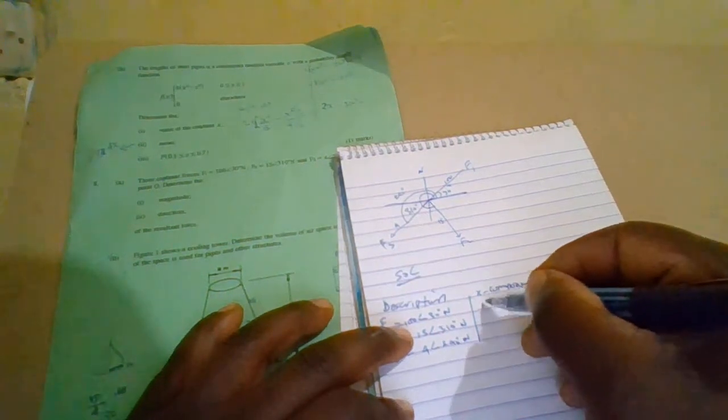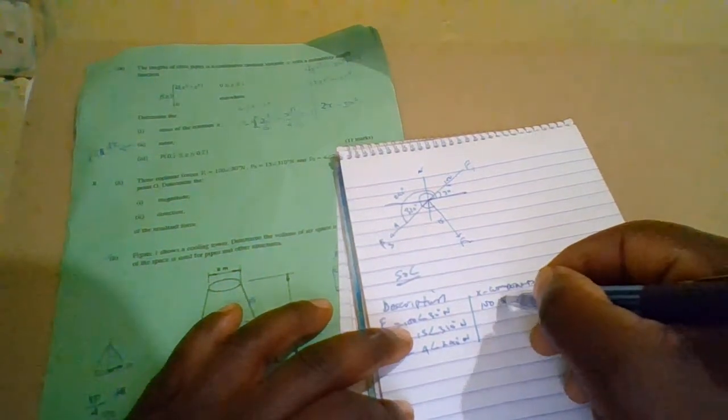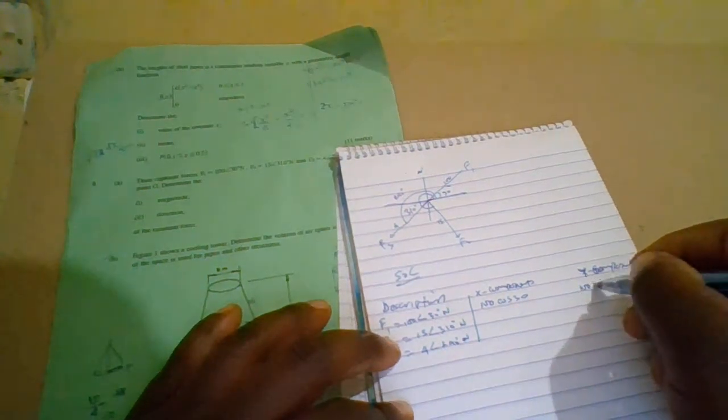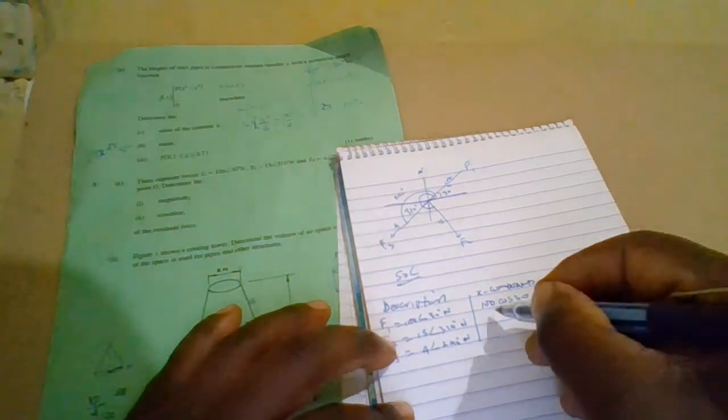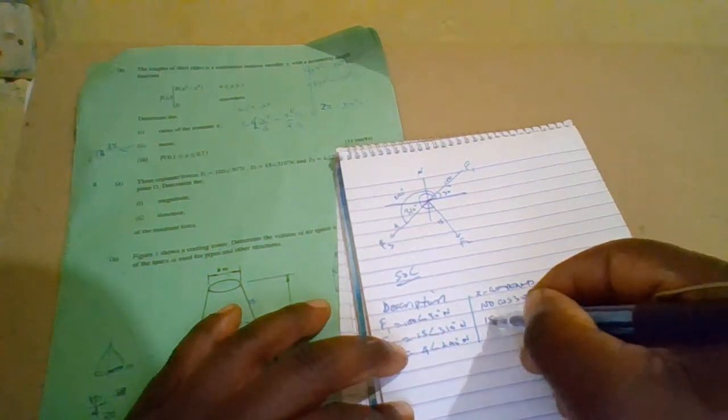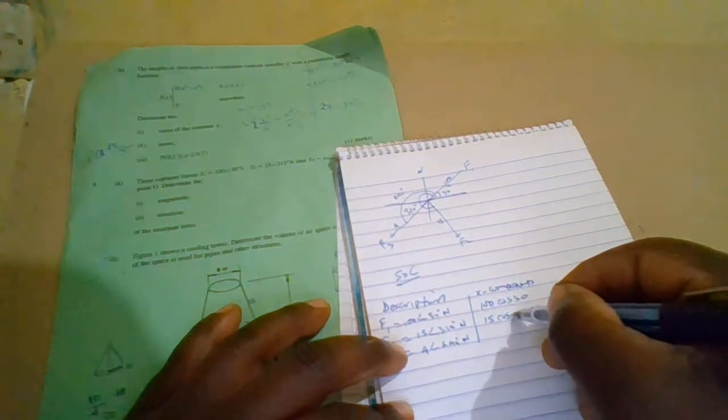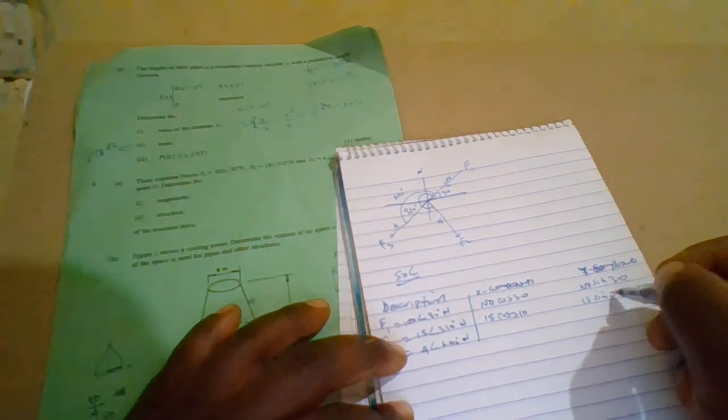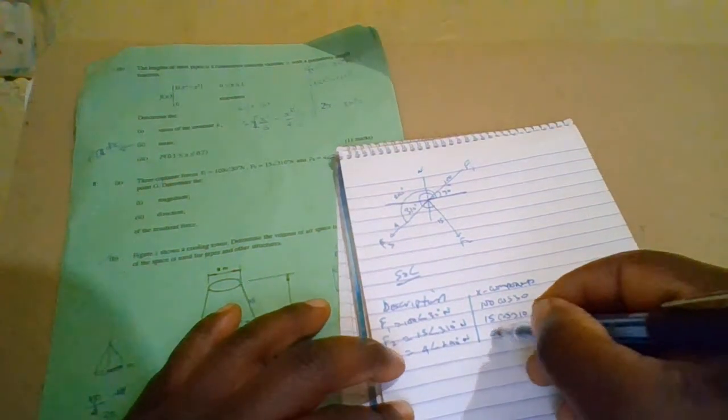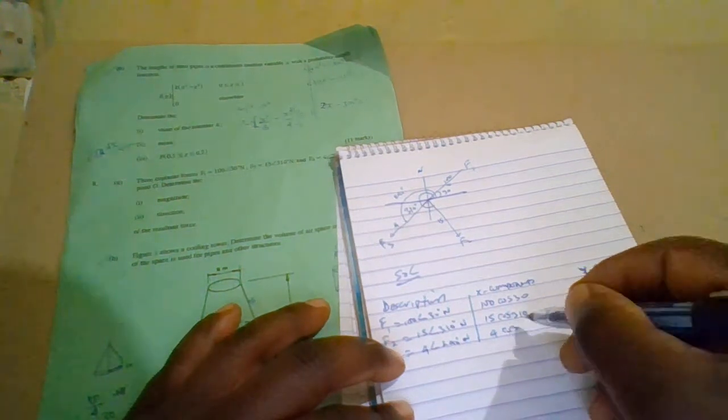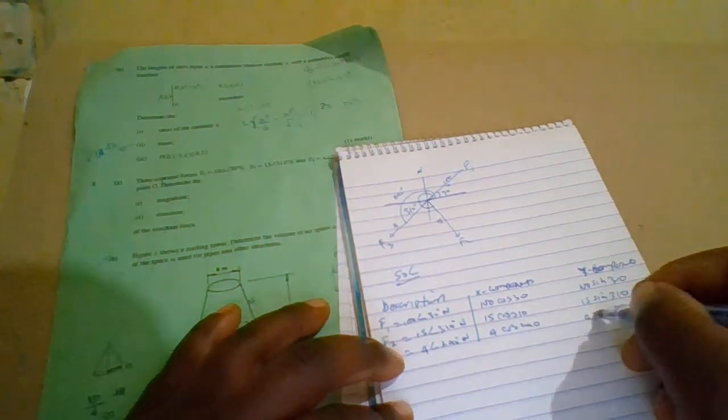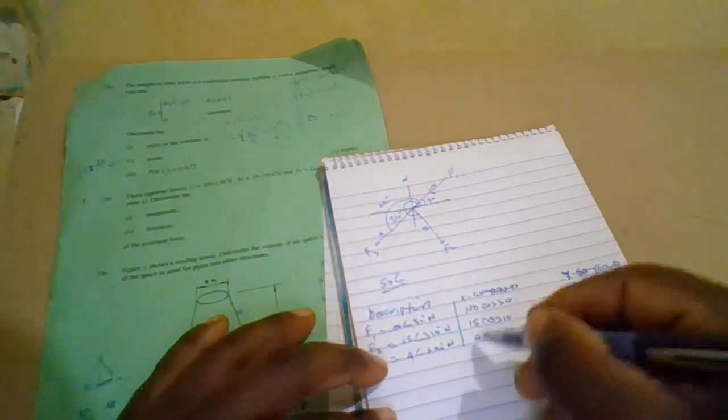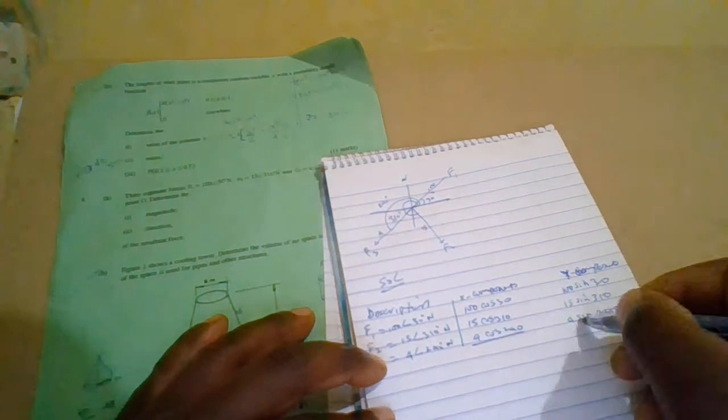X components, so we have here, it will be 100 cos 30, and then these would be 100 sine 30, this would be 15 cos 310, this would be 15 sine 310, this would be 4 cos 240, this would be 4 sine 240. Now get the total of this so we can use the phone to calculate these forces.